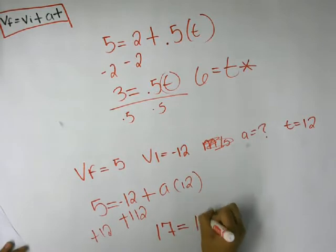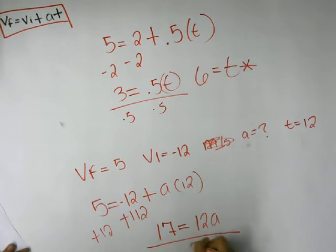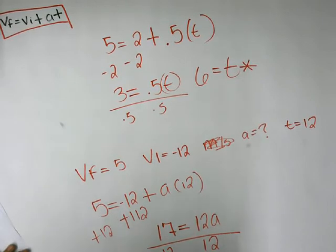And again, we just divide by 12 to get the variable on its own. And 17 divided by 12 ends up being 1.416 repeated, and that's an approximate. So yeah, there goes initial velocity.